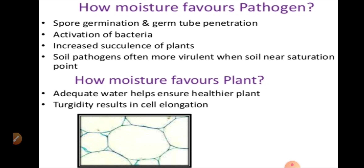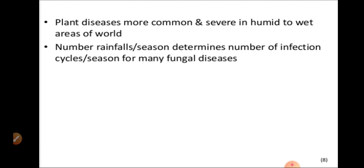Moisture favors pathogens through spore germination and germ tube penetration, activation of bacteria, increased succulence of plants, and soil pathogens are often more virulent when soil is near saturation point. Moisture also favors plants: adequate water helps ensure healthier plants and turgidity results in cell elongation. Plant disease is more common and severe in humid to wet areas. The number of rainfalls determines the number of infection cycles and the disease season for many fungal diseases.